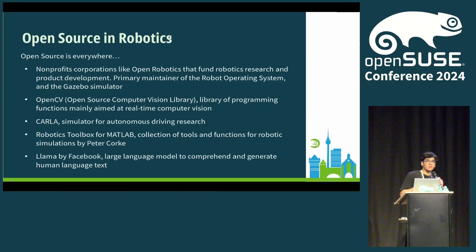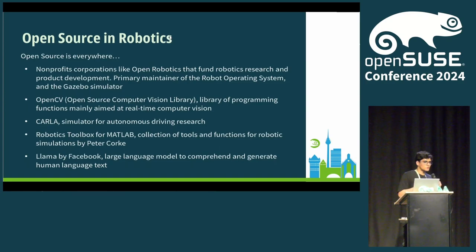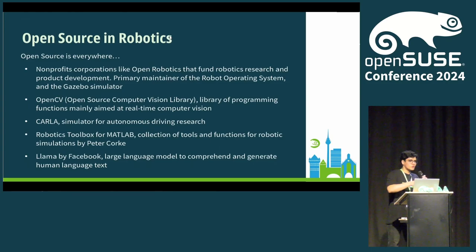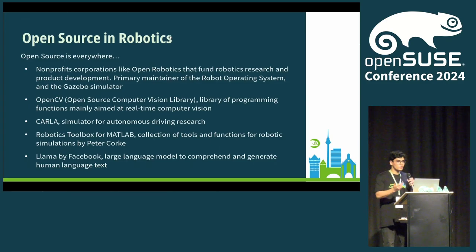Recently, a company called Figure One released a humanoid robot which you can talk to in real time. Your audio input — speech input — goes in as text. An LLM gives you a text-based response, it comes back as audio. So you're basically talking to the humanoid robot in real time.